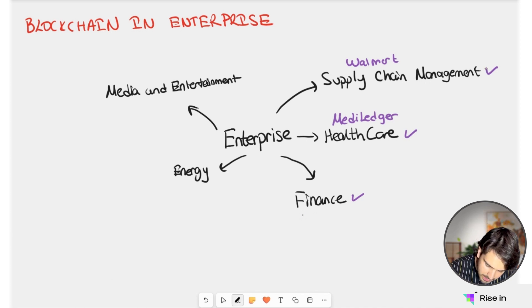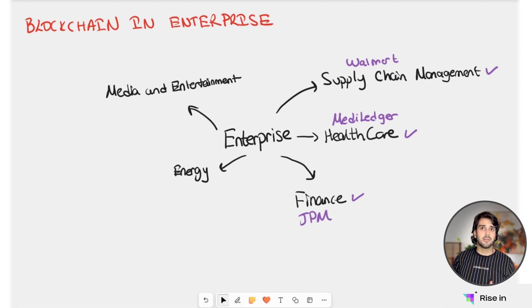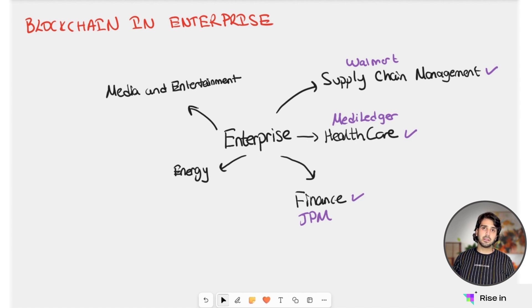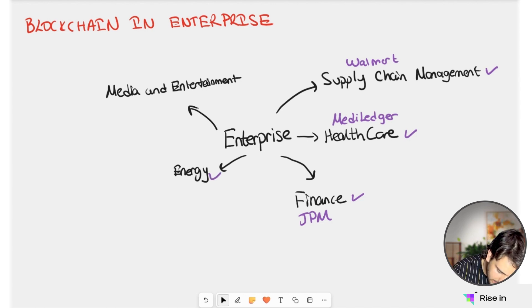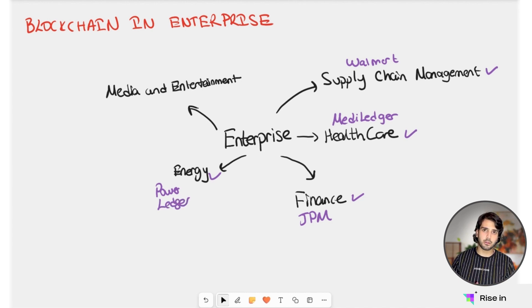In the energy field, we can have peer-to-peer energy trading, and we can also optimize the production, distribution, and consumption of energy by enabling smart grids, microgrids, and peer-to-peer energy trading. Power Ledger is a platform where users can sell their excess power to their neighbors or the grid.